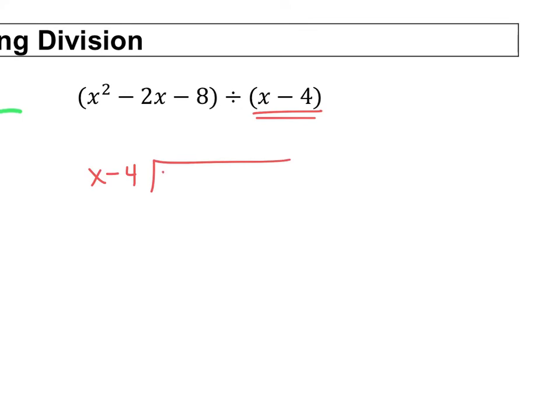Divides into, or however you want to say it, x squared minus 2x minus 8. All right, start with the first terms. x squared divided by x is x, and then we multiply x times x minus 4, so x times x is x squared.